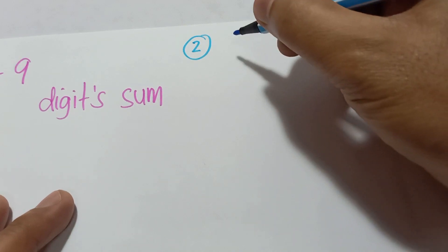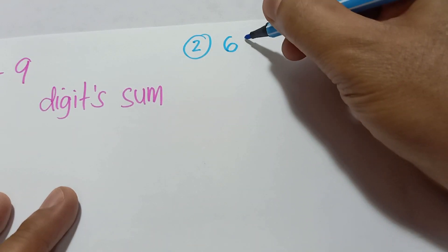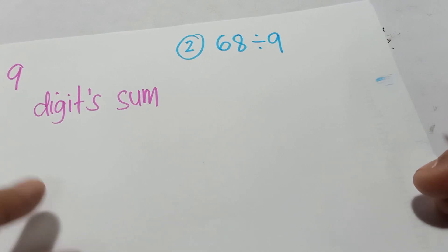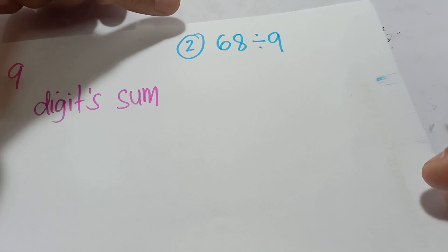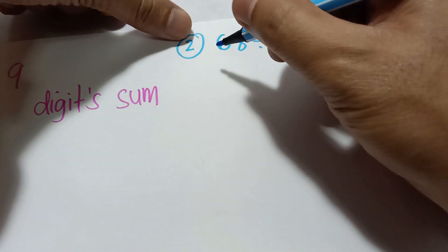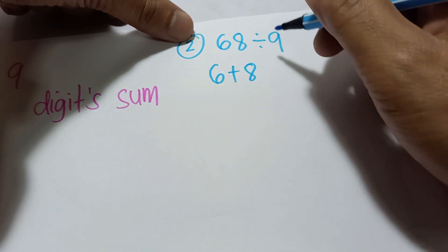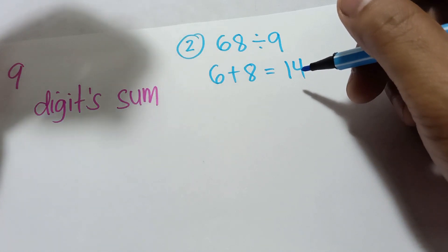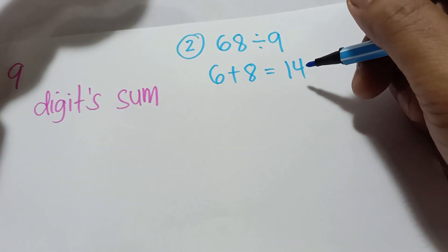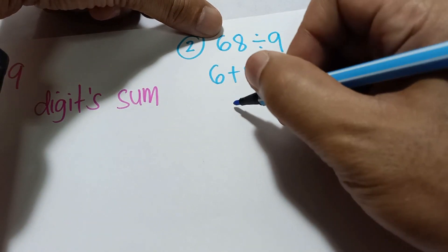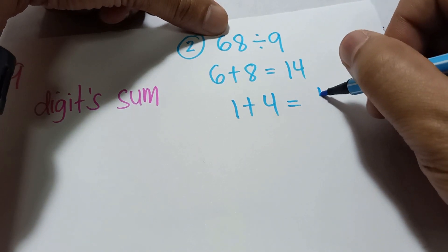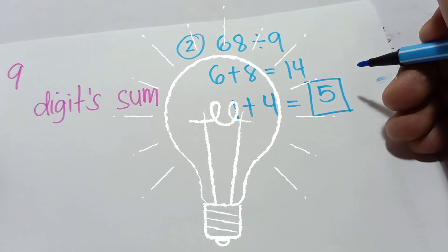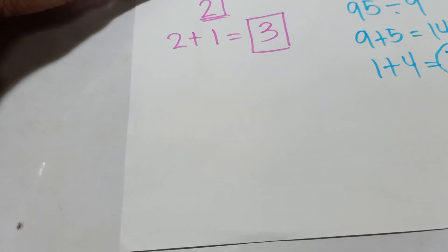Example number two: if you have 68 divided by 9, our target is to find the remainder. Get the digit sum: 6 plus 8 equals 14. As I said, do not stop until you get a single digit, so 1 plus 4 equals 5. Therefore, the remainder when you divide 68 by 9 is 5.